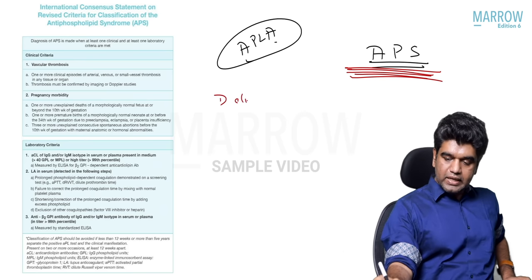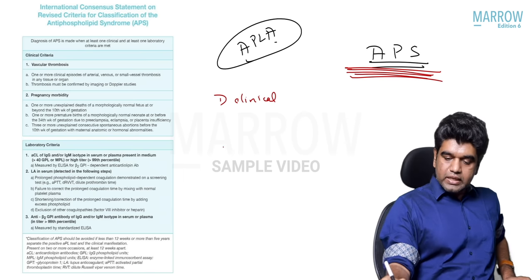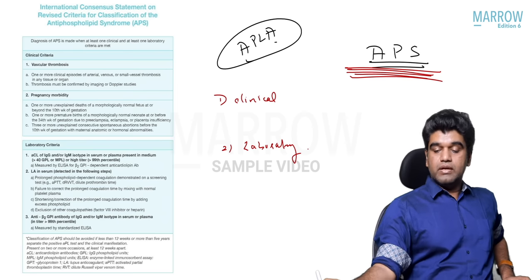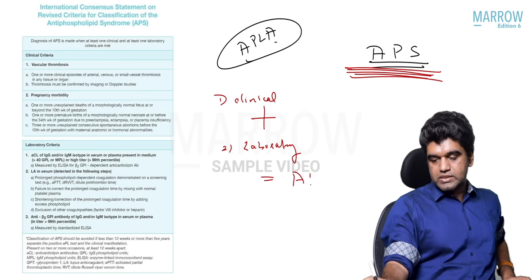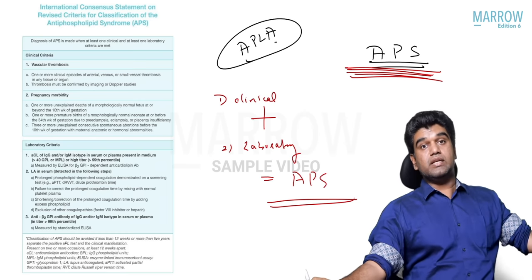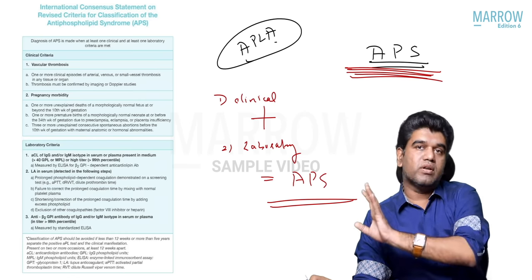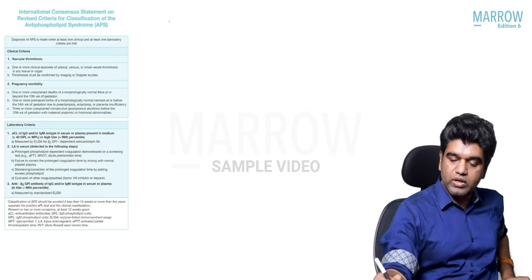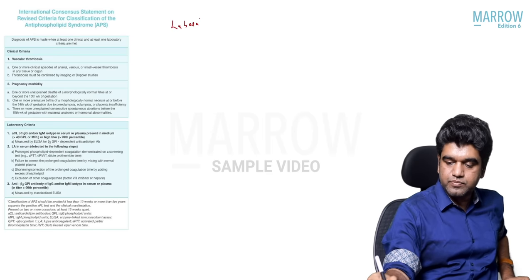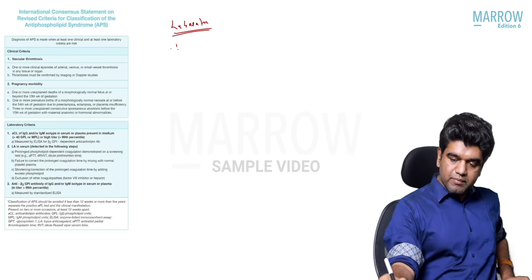A person should be having a clinical criteria and a laboratory criteria to call it antiphospholipid syndrome. When clinical and laboratory criteria are together satisfied, we call it APS. So both clinical and laboratory criteria must be satisfied together.